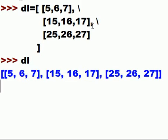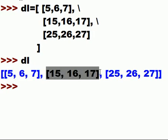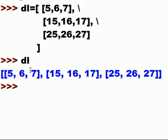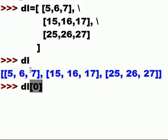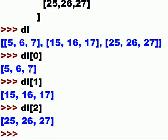Let's check this — do a DL and there they are: the 0th list, the 1st list, and the 2nd list. Let's see if that is in fact what we have. I'll key in DL, show me the 0th list — I hit enter, I get 5, 6, 7, very good. Show me the 1st list: 15, 16, 17. Show me the 2nd list and I get 25, 26, 27.